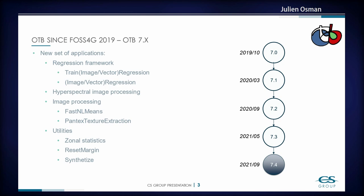We also have some new utilities. Zonal Statistics lets you get statistics about different classes from classification output. ResetMargin is similar to the ExtractROI application but instead of cropping the image, the output is the same size as the input with the region of interest preserved and everything else set to zero or another chosen value. The Synthesize application takes a list of images as input and the output pixel takes the value of the first non-zero pixel in the series — useful for concatenating masks.